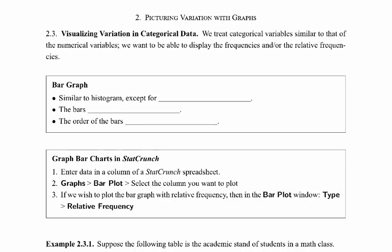For numerical, we talked about the three types of graphs we can use to describe those: a dot plot, a histogram, or a stem plot. So now for categorical, we're going to look at the graphs we use for those.